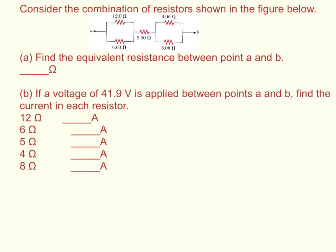Consider the combination of resistors shown in the figure below. Find the equivalent resistance between point A and point B. And if the voltage is 41.9 volts as applied between points A and B, find the current in each resistor.